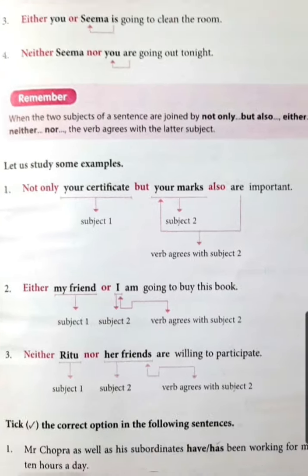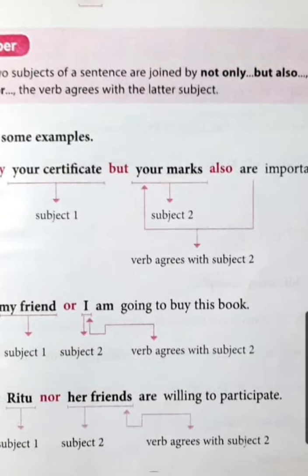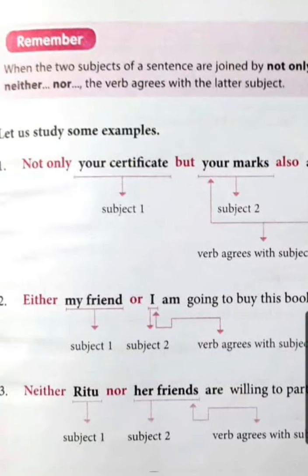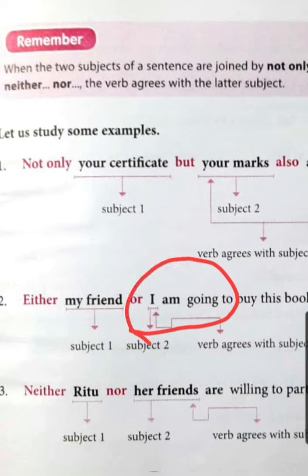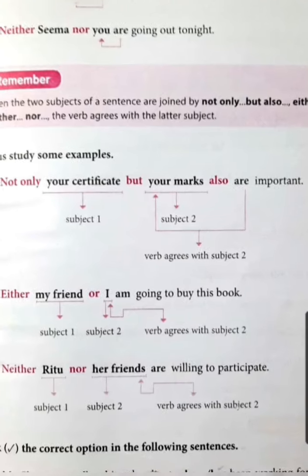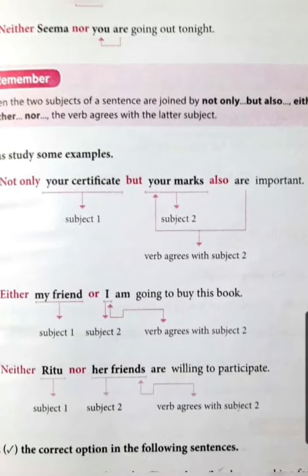Next sentence: 'Either my friend or I am going to buy this book.' The second subject is 'I', and with 'I' we use 'am'. Next: 'Neither Ritu nor her friends are willing to participate.' Here the second subject is 'her friends', and the verb agrees with the second subject. Since 'friends' is plural, we use 'are'.